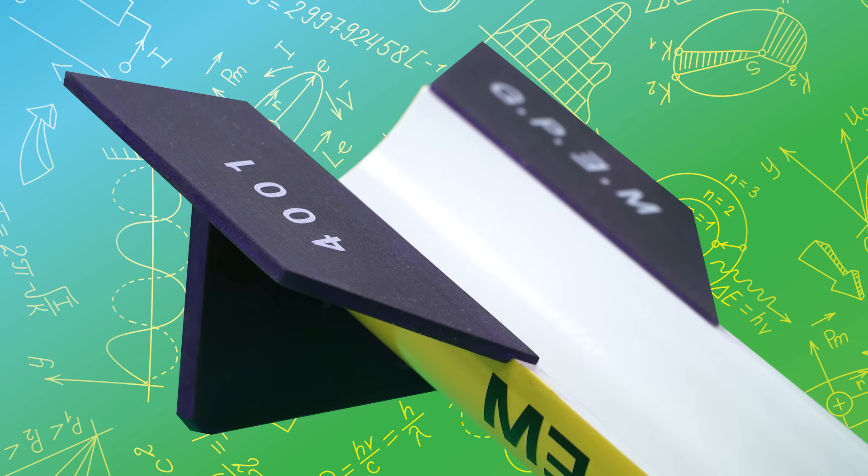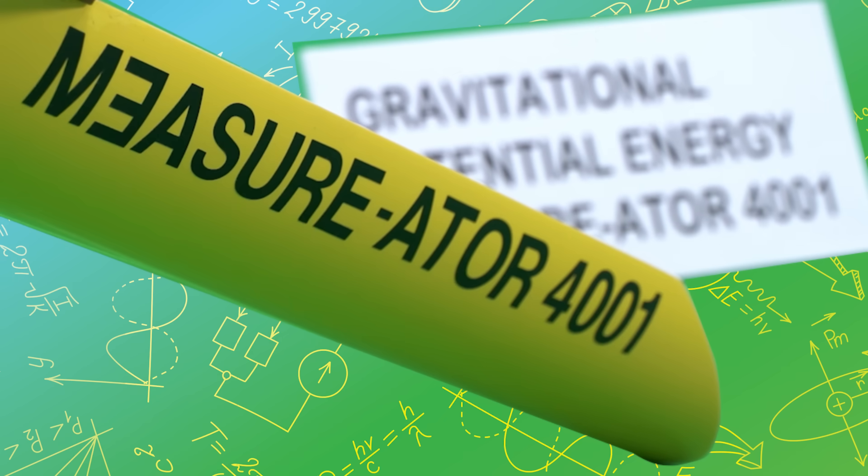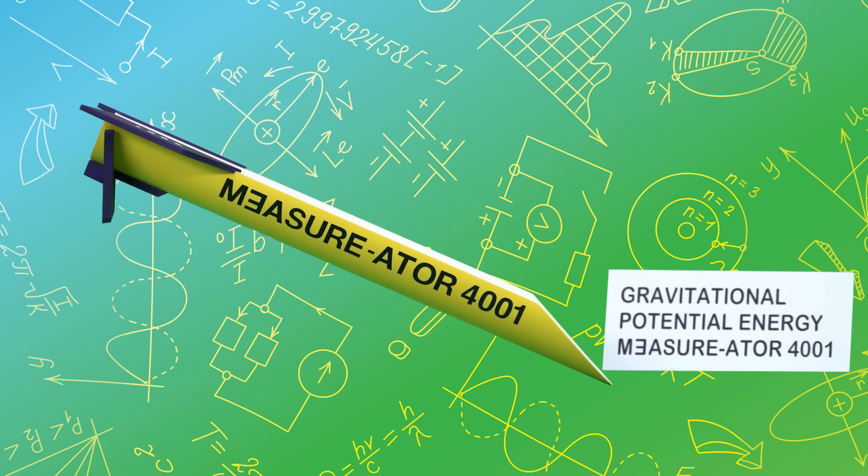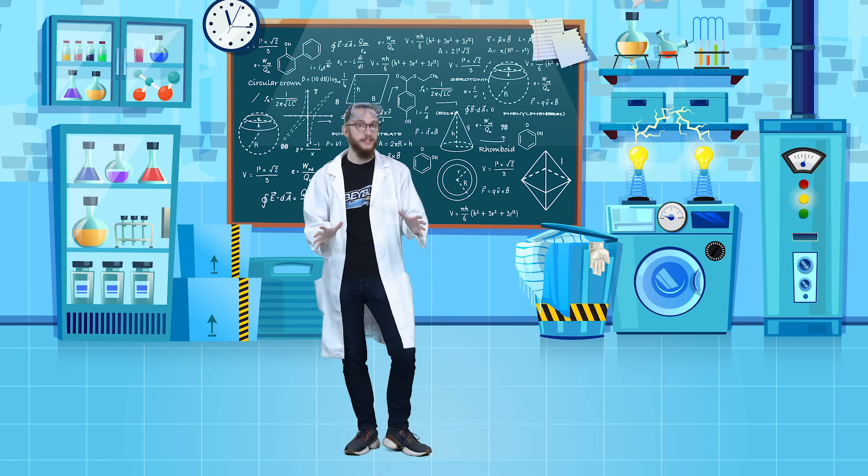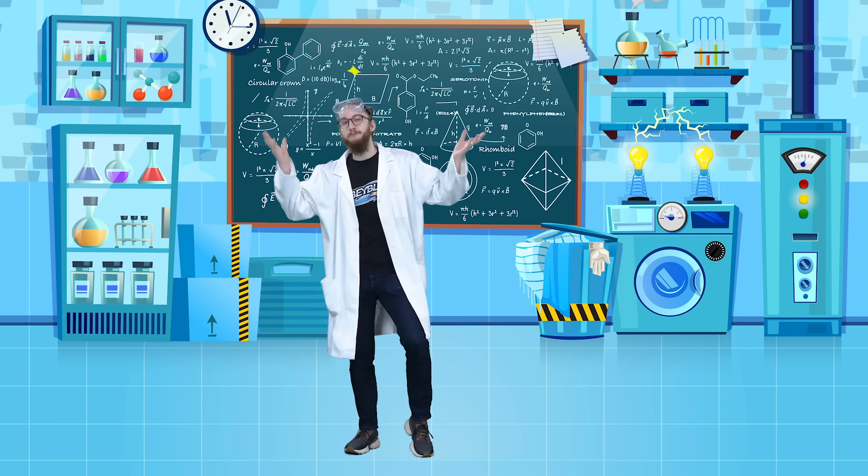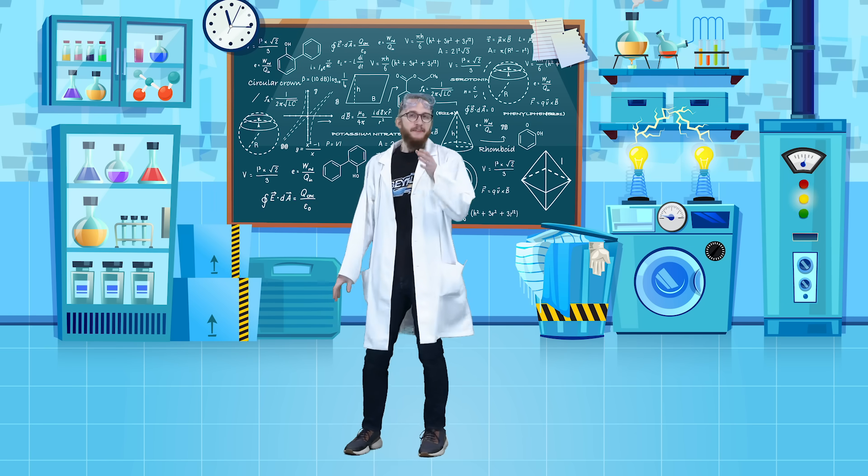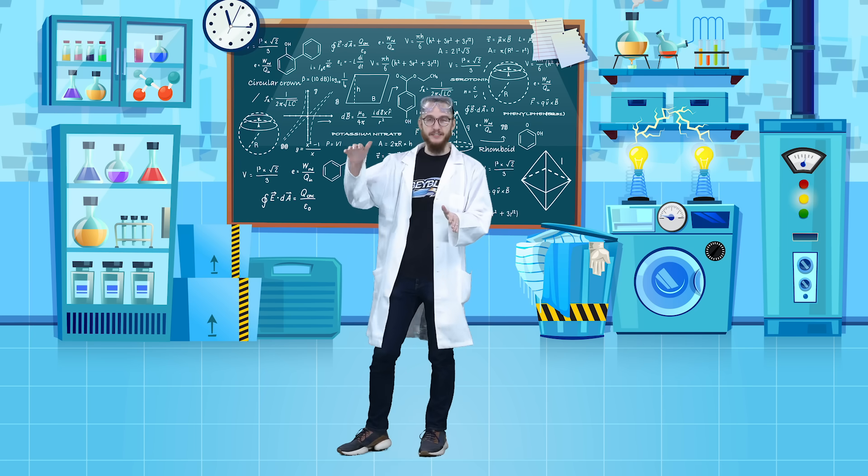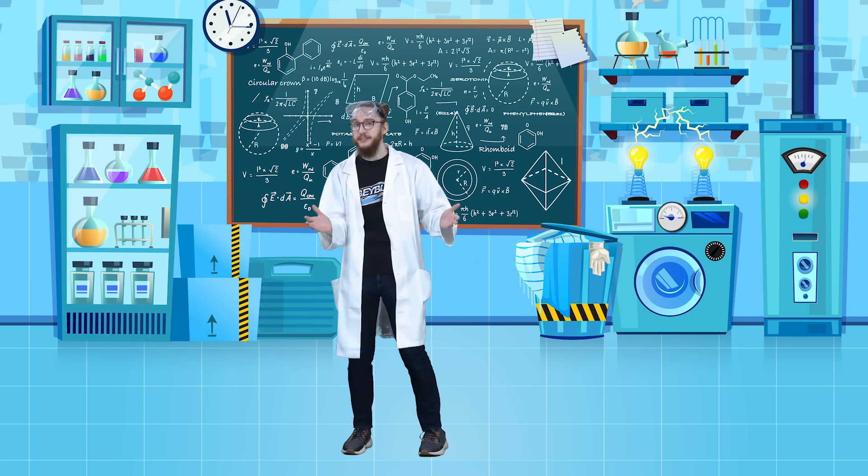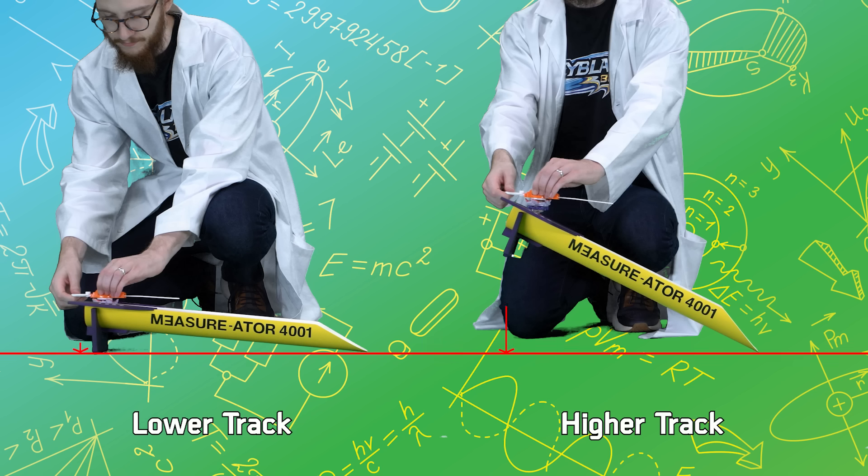If we want to measure the gravitational potential energy of our Beyblade, we're going to need some kind of, I don't know, gravitational potential energy measure rate of 4001. Behold! If gravitational potential energy is real, and not just a figment of my overactive imagination, then that means that a Beyblade launched from a higher position should have more gravitational potential energy in it. So when we launch a Beyblade from the higher track, it should have more energy and then travel further.